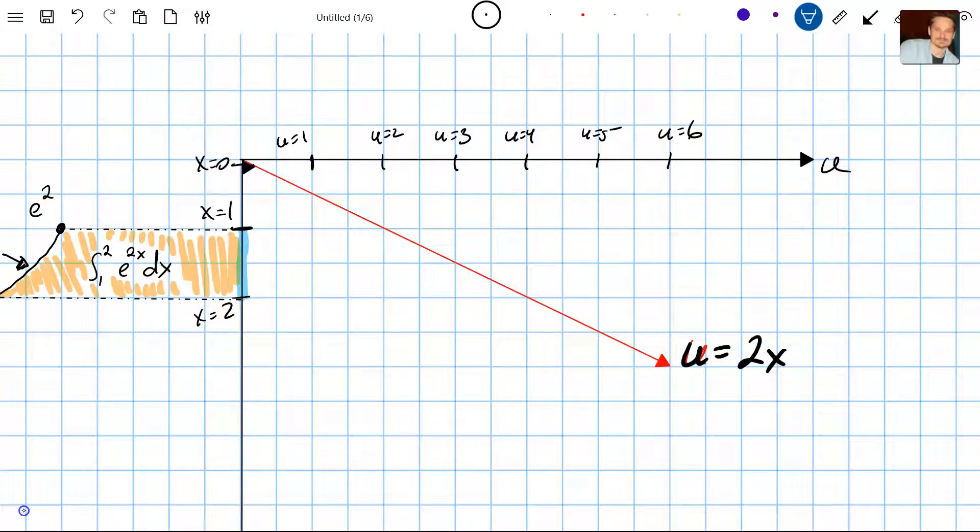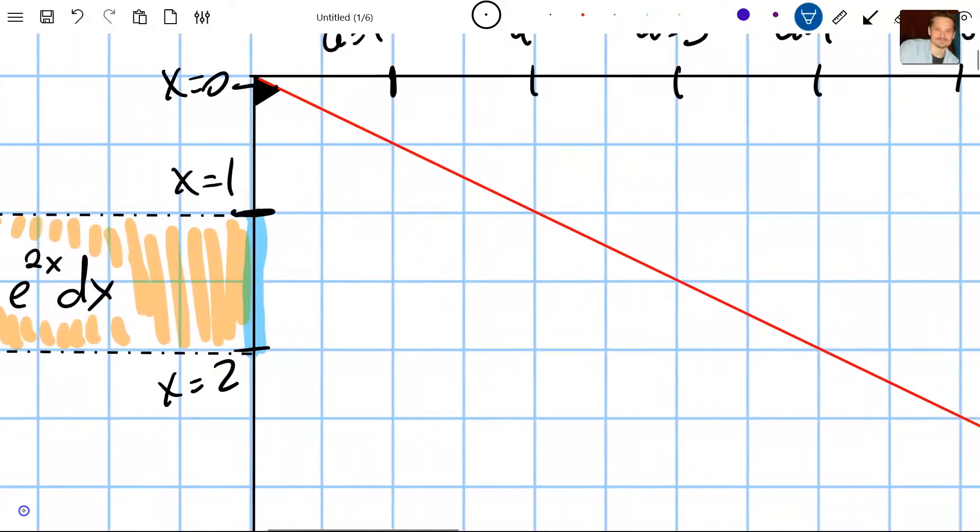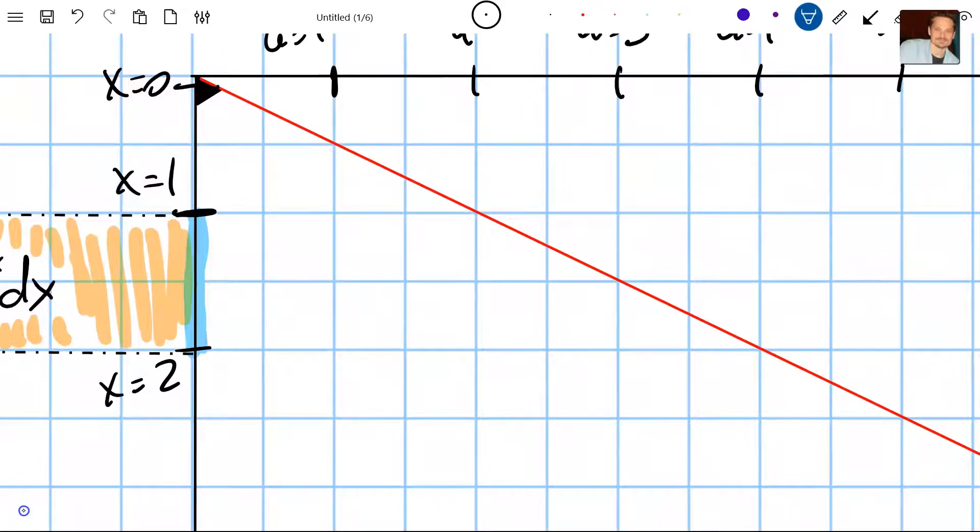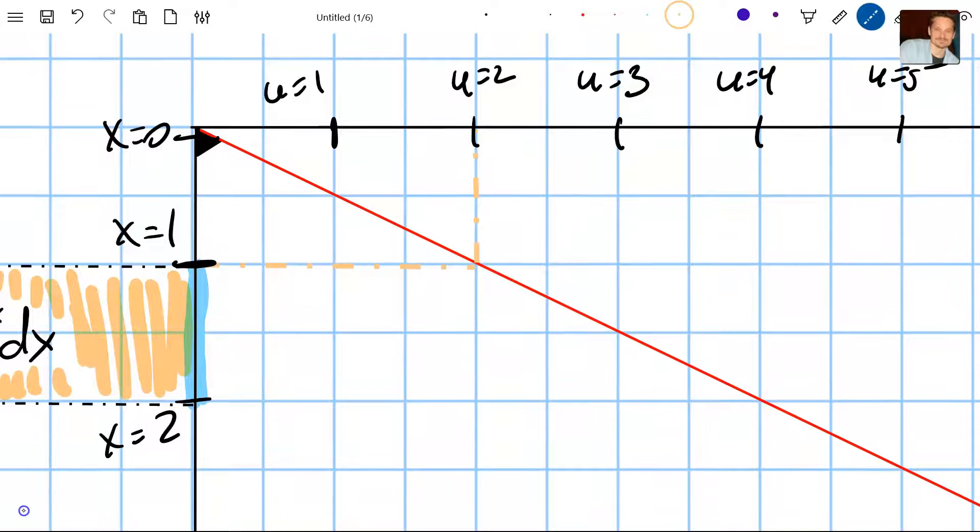Once that curve is in place, then we can begin transforming from x-space, which looks like this, to u-space with the hope that in u-space integration will be easier than in x-space. So take a look. For example, when x has the value 1, this has to transform to u-space to get a new lower limit of integration. When I carry that out, it's going to be this. See this? It's going to go from here to here. So if you look at that dashed line, you see u equals 2.